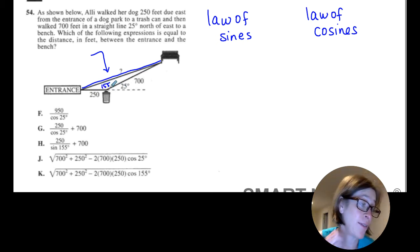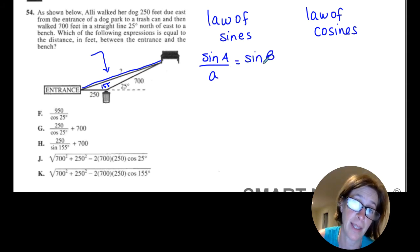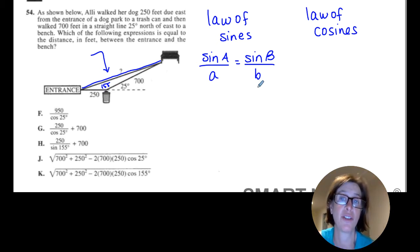So I just don't have enough to use the law of sines. But as a reminder, the law of sines would be sine of A over a equals sine of B over b. Now when I use the small variables, that refers to the side lengths of the triangle.